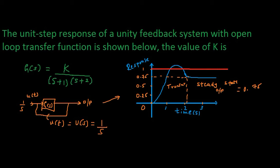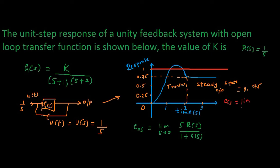We need to find the value of k. It can be done in multiple ways, but let's make use of a simple formula. We know that the steady state error of a control system can be found by: e_ss equals the limit as s tends to 0 of s times R(s) upon 1 plus G(s), where G(s) is the open loop transfer function. Here R(s), our input, is 1/s.